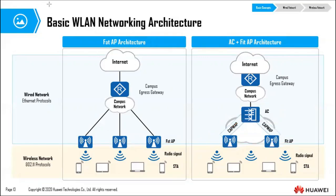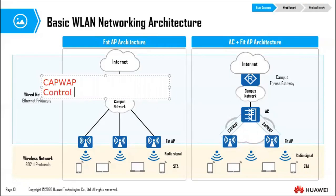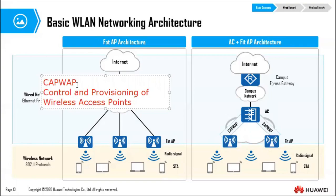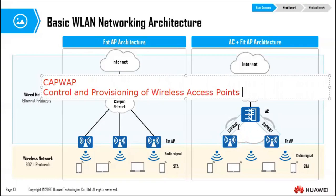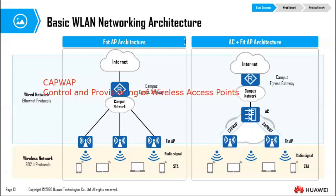CAPWAP — Control and Provisioning of Wireless Access Points — is used to implement communication between APs and ACs. It is used to maintain the running status of ACs and APs, allow ACs to manage APs and deliver service configuration, and exchange data sent by stations. Data from a station passes through the CAPWAP tunnel to the AC, then to the egress router.